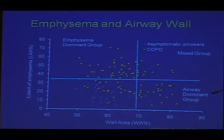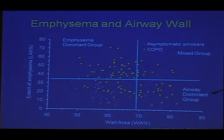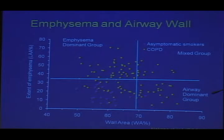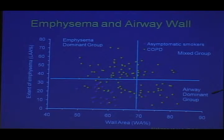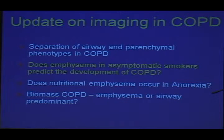We've also done studies in large genetic studies to show that the dominant pattern is familial. If two brothers smoke and one develops predominant emphysema phenotype, the brother who smokes also develops predominant emphysema phenotype, and the same with airway phenotype. So there is a heritable component to these phenotypes.